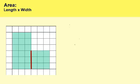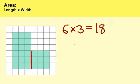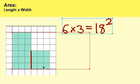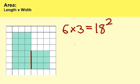So as you can see, we have a length of one, two, three, four, five, six, and the width would be one, two, three. So we have six times three, which is equal to 18 square units. Now for the second area, we have one, two, three for the length and one, two, three for the width. So we multiply three by three — three times three equals nine square units.